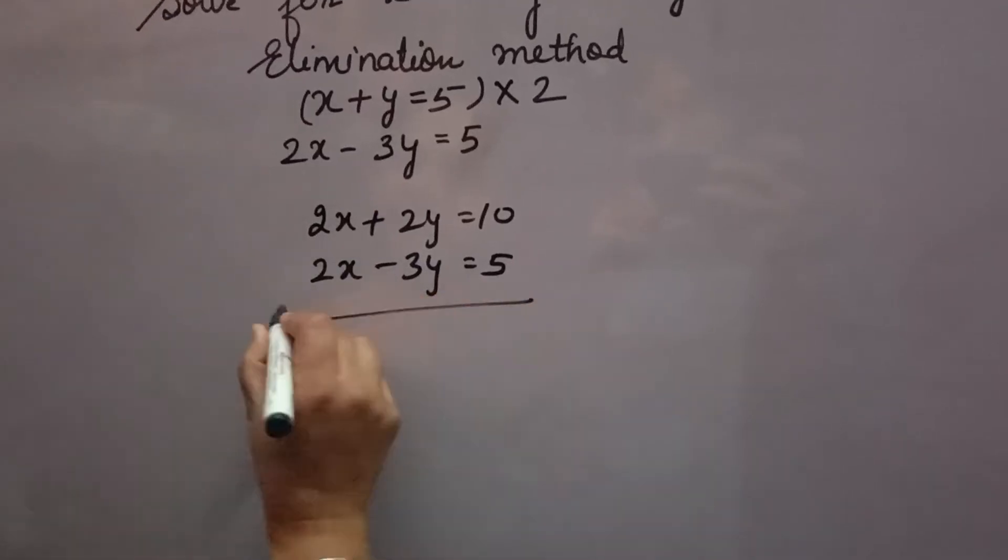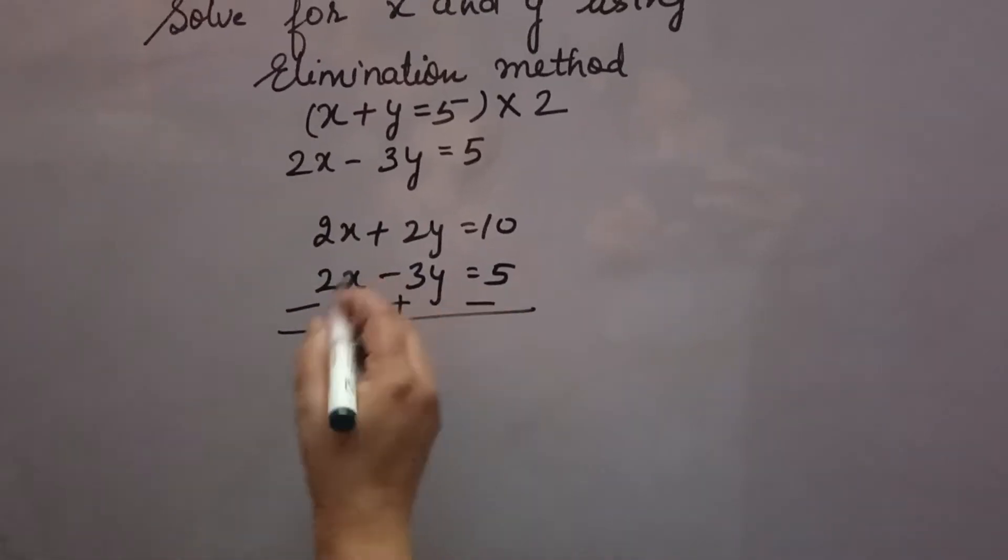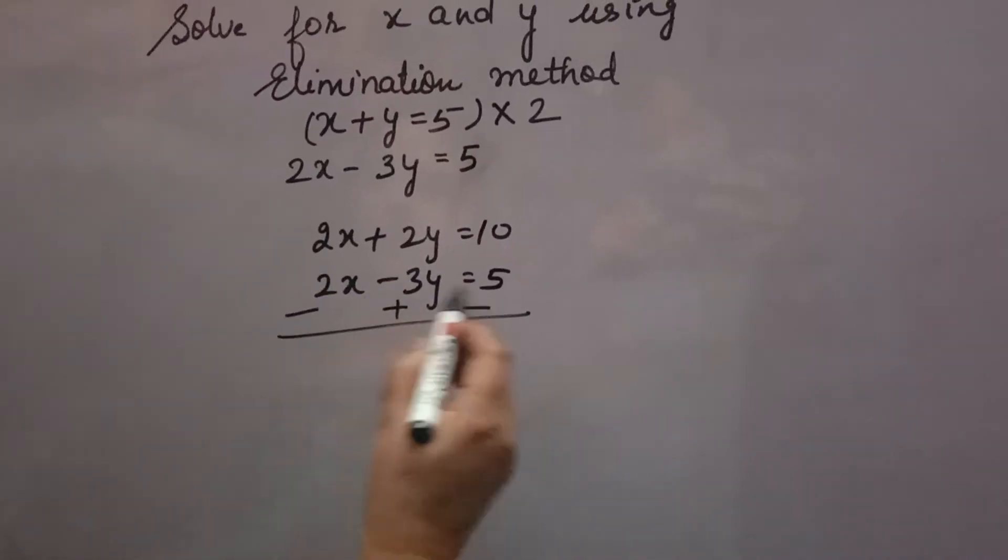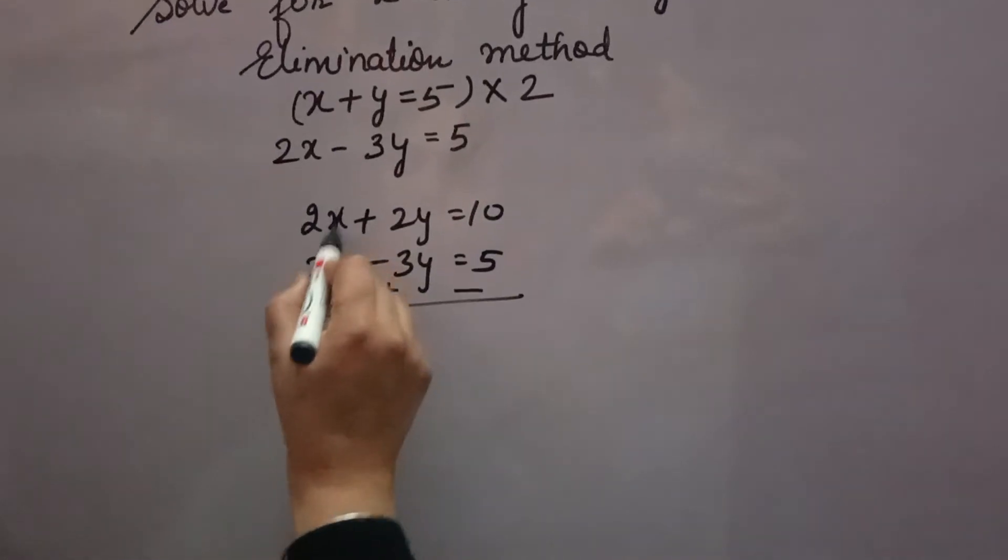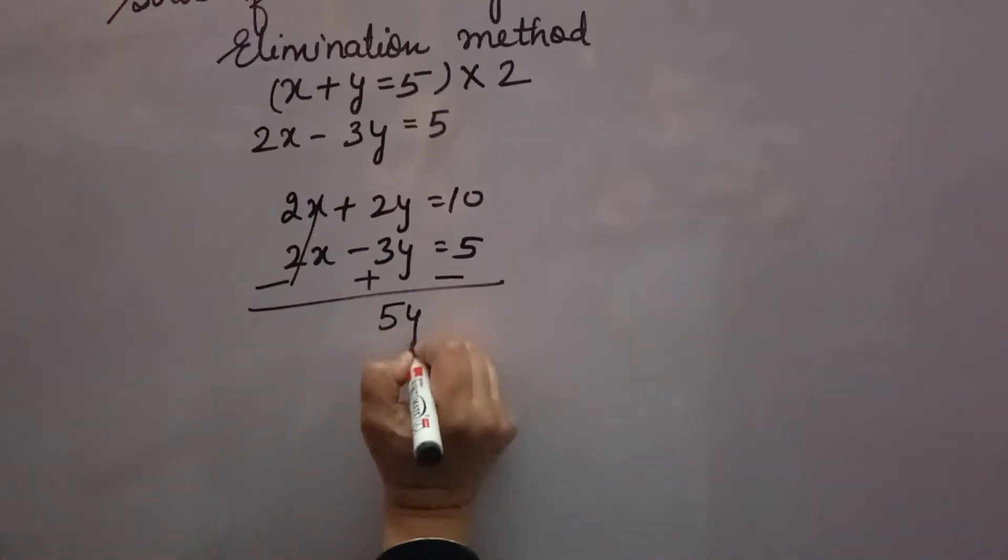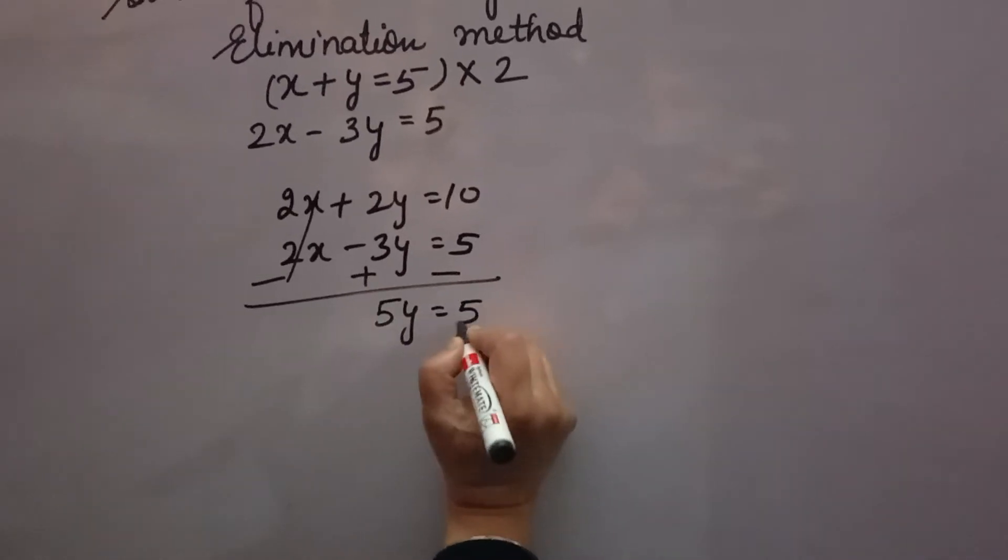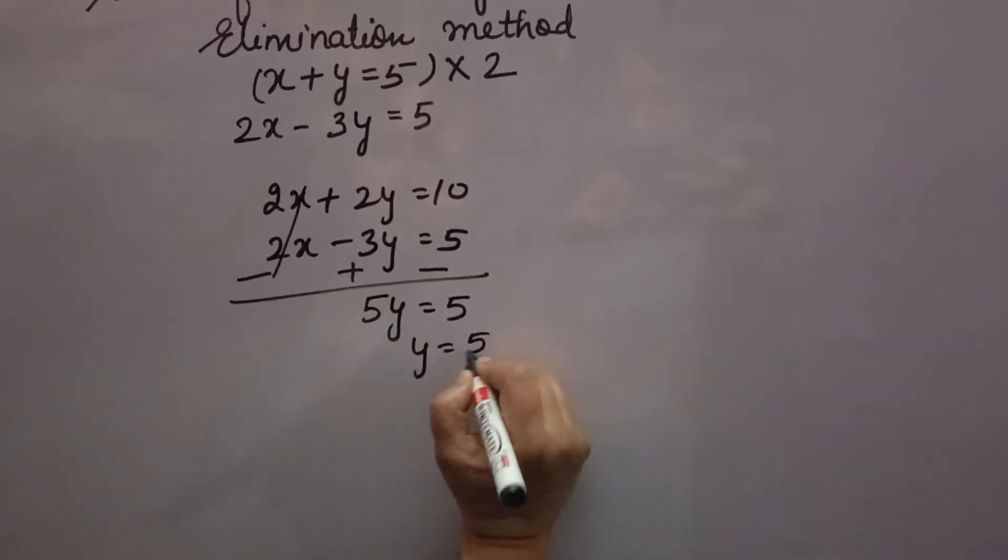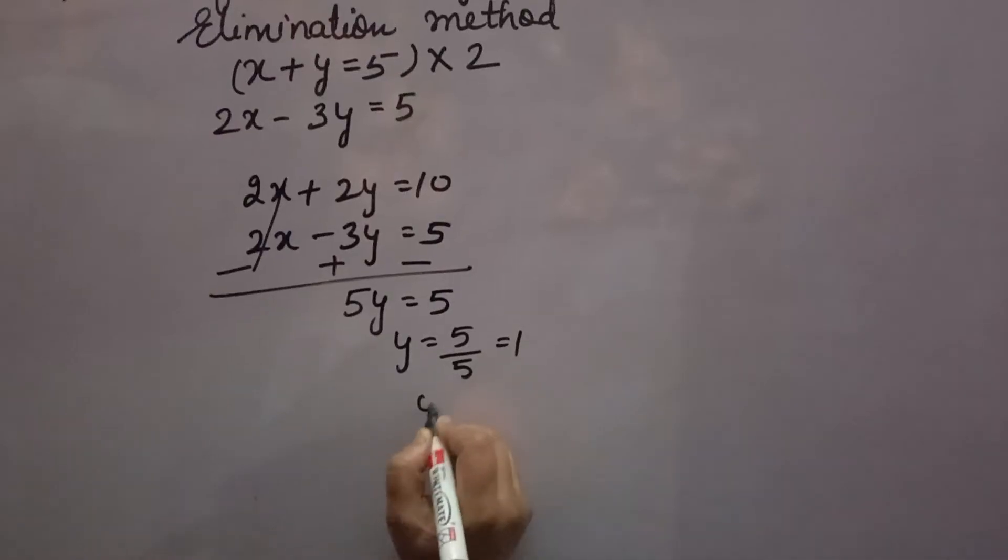Then you will subtract. Sign of downside equation will be changed. 2x minus 2x is 0, you can cancel. 2y plus 3y is 5y. 10 minus 5 is 5. y will come 5 over 5, that is 1. y value is 1.